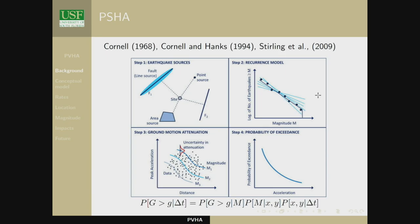Why did he do that in the mid-60s? In the early 60s, there was a great effort to build a nuclear power plant at Bodega Bay — exactly on the San Andreas Fault. Engineers thought it was a nice spot and built the foundation before somebody noticed there was a fault nearby. So probabilistic seismic hazard assessment was born. It really was that simple.